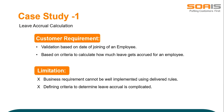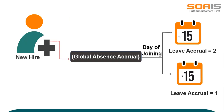The limitation of the delivered application is that this cannot be well implemented using delivered rules, and defining criteria to determine leave accrual is complicated. Basically, they require that whenever a new employee is getting hired, leave accrual needs to be done based on the day of joining of the employee. If the employee joins the organization within the first 15 days of a month, then leave accrual will be 2. On the other hand, if the joining day is after the 15th day of the month, then leave accrual will be 1.